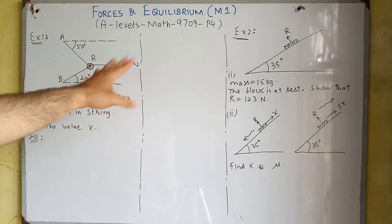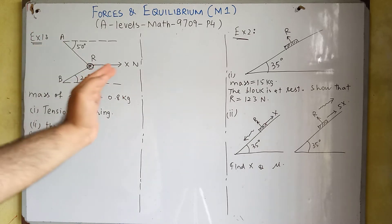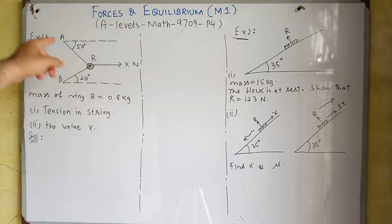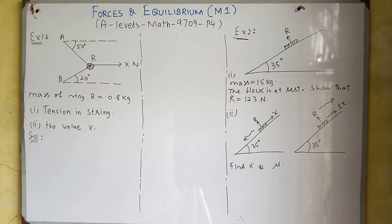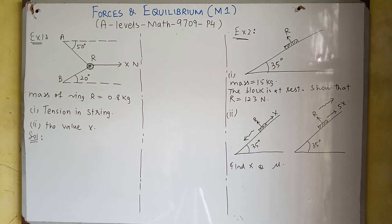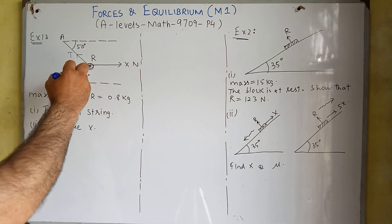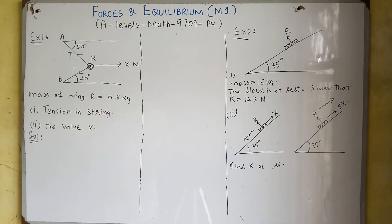After application of force X newton, we have two components of this string: component AR and component BR. Component AR is making an angle of 50 degrees and component BR is making an angle of 20 degrees with the horizontal surface. There will be tension in both portions of string AB — the same tension T along portion AR and along portion RB. First we need to find the tension in the string, and then find the value of force X.